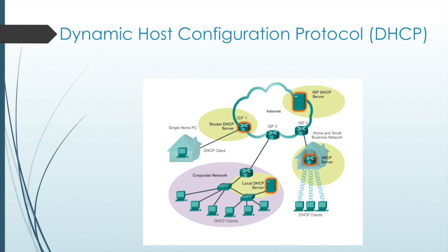The Dynamic Host Configuration Protocol service enables devices on a network to obtain IP addresses and other information from a DHCP server. This server automates the assignment of IP addresses, subnet masks, gateway, and other IP networking parameters. The alternative to dynamic addressing is static addressing, where the network administrator manually enters IP address information on network hosts. DHCP allows a host to obtain an IP address dynamically when it connects to the network. The DHCP server chooses an address from a configured range of addresses called a pool and assigns it to the host for a set period. On larger networks or where the user population changes frequently, DHCP is preferred. If a host is taken off the network, the address is returned to the pool for reuse.